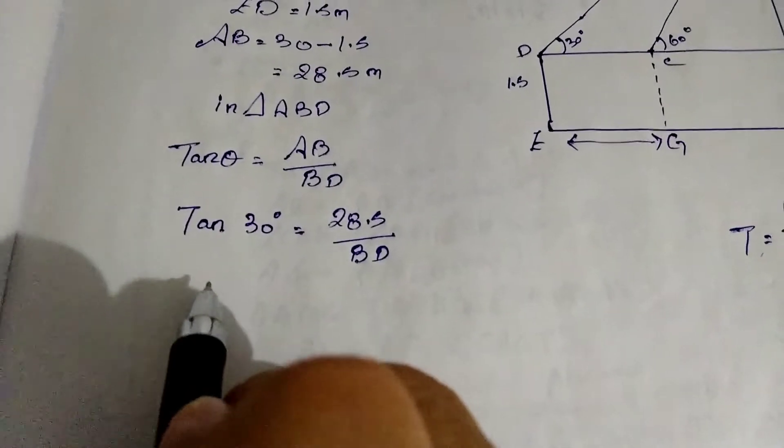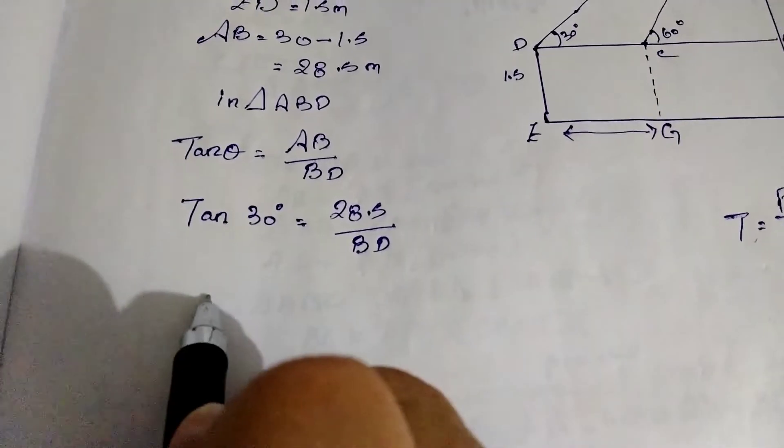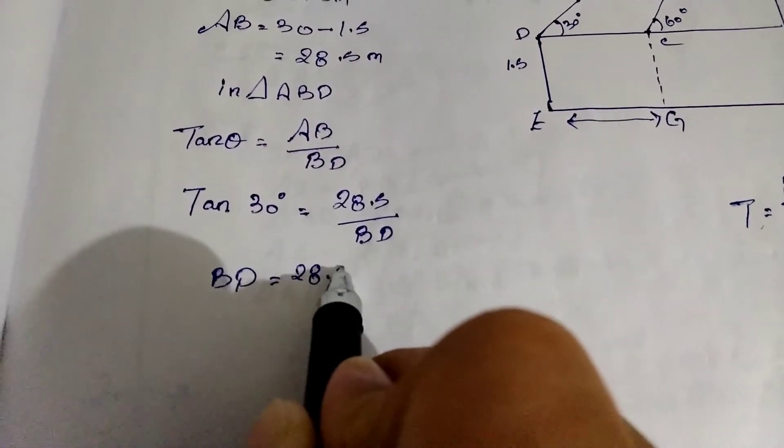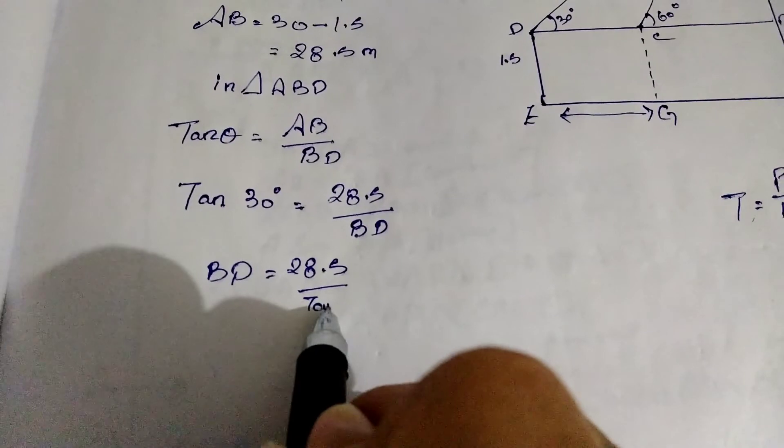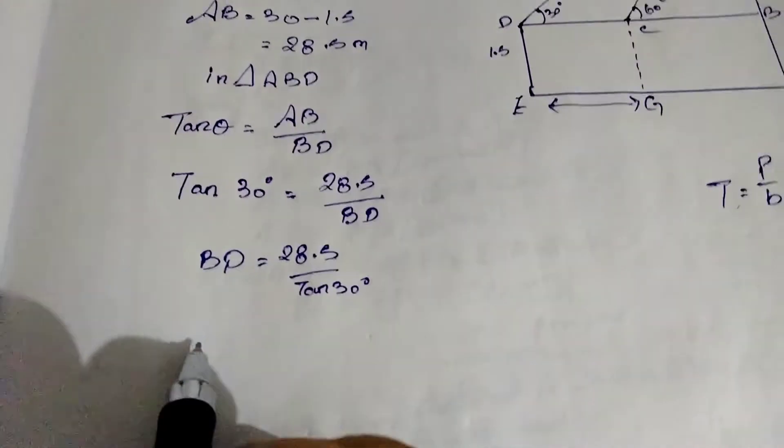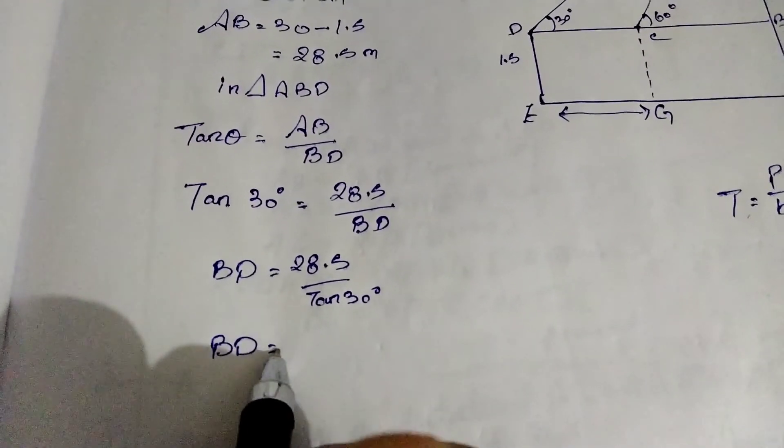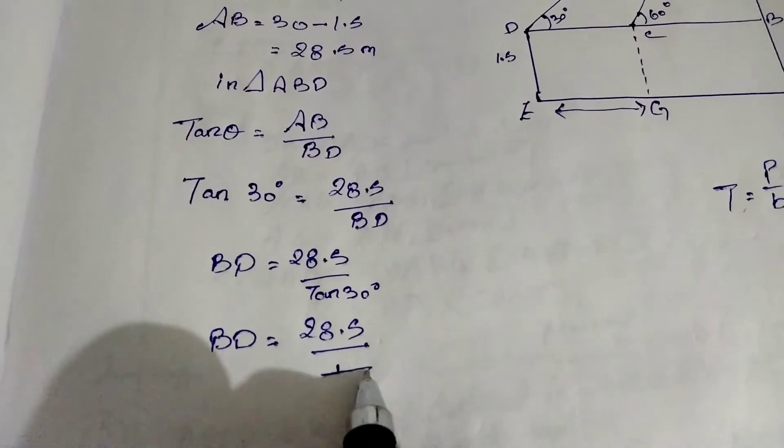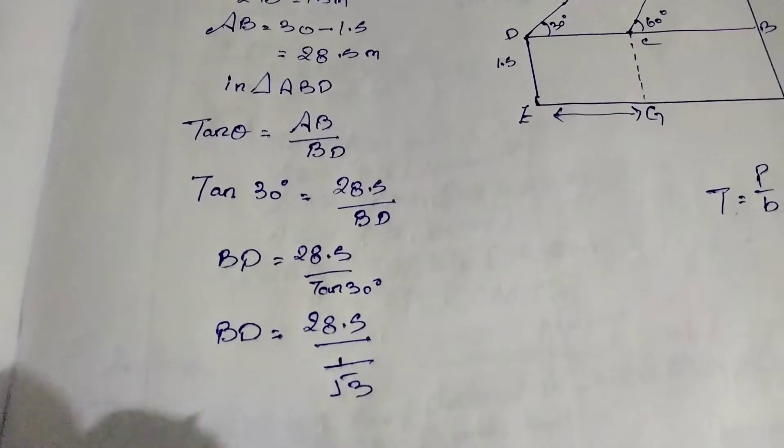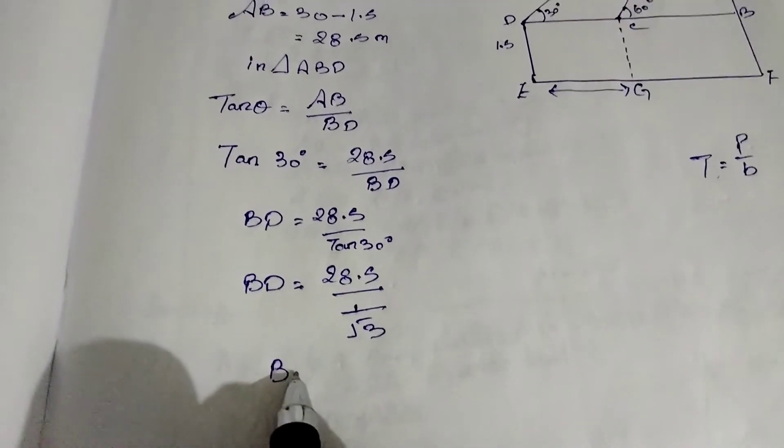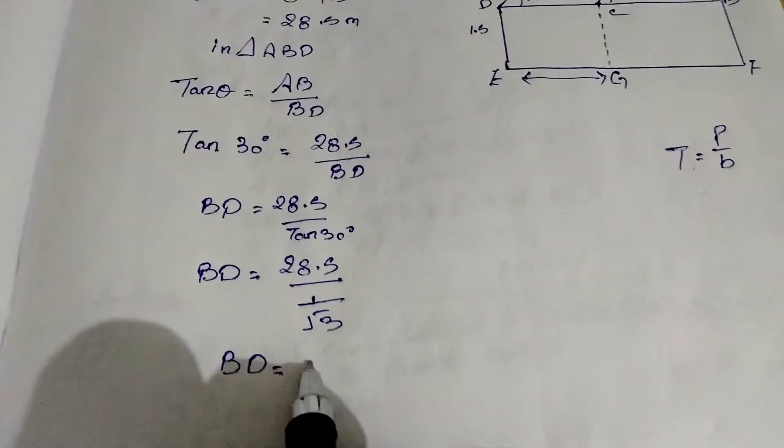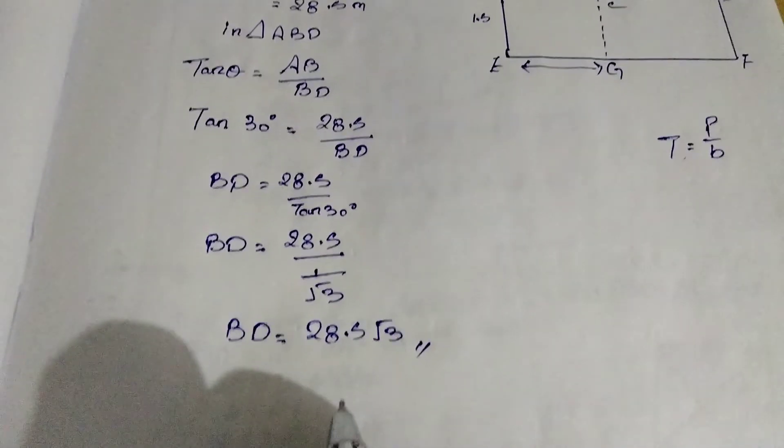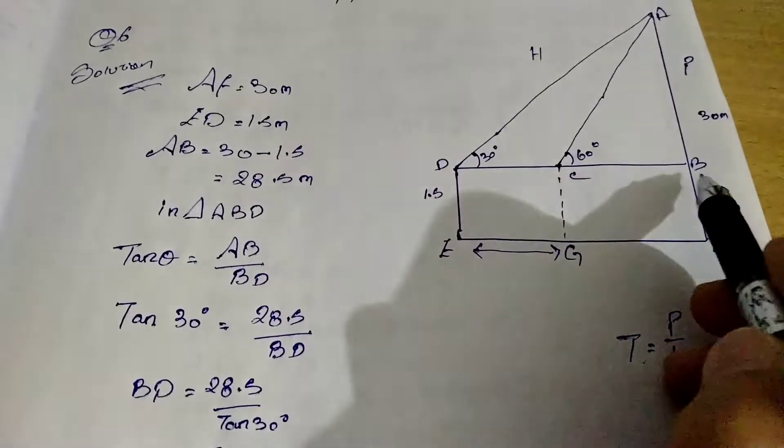Next line. BD equal to 28.5 by tan 30 degree. BD equal to 28.5 by tan 30 degree, which is 1 by root 3. So BD, in the final form, we have 28.5 root 3. We got BD.